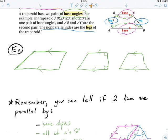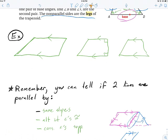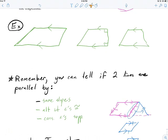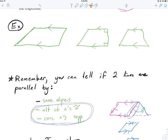Sometimes it'll ask what shape is this on a coordinate plane. You can tell two lines are parallel by them having the same slope, or you could use angle pair relationships: if alternate interior angles are congruent, or corresponding angles are congruent, or if consecutive interior angles are supplementary — all of those can tell you that two lines are parallel.